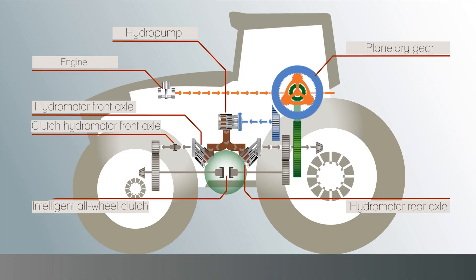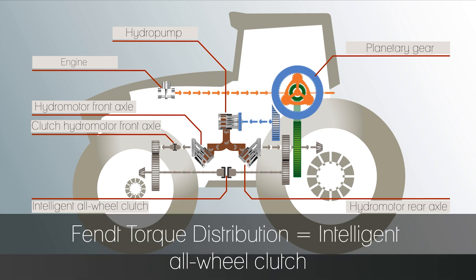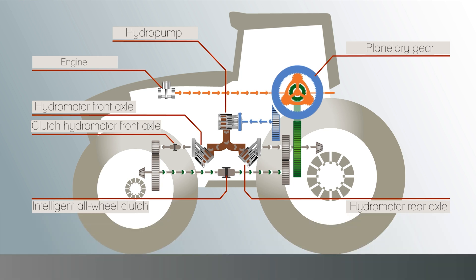On top of that there is also an intelligent all-wheel drive clutch, the so-called Fendt torque distribution. This clutch detects when the front or rear wheels are slipping and automatically transfers torque to the other axle which is not slipping to ensure permanent traction. As mentioned the whole thing works up to 25 kilometers per hour and above that the front hydraulic motor is decoupled to avoid drag losses and such.